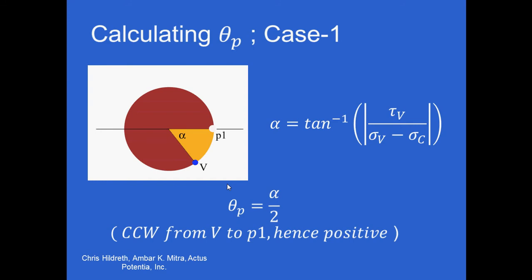Now we've come to finding the stress transformation angle, or theta p. What you always do with this is you look at the vertical point that you plotted, and you go from the vertical point towards sigma p1, where that makes an angle. On Mohr's circle, the angle that it makes, which is labeled alpha, is going to be 2 times what theta p actually is. This is the equation to find alpha, and then once you have that, you have to divide it by 2 to get the actual theta p.